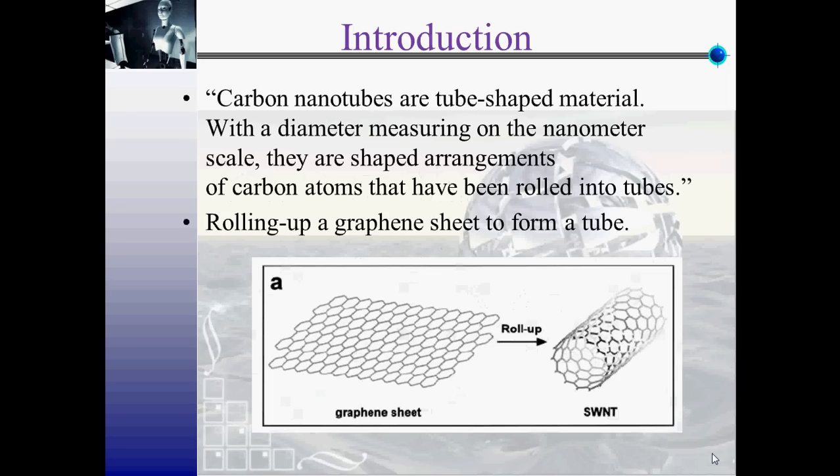They are shaped arrangements of carbon atoms that have been rolled into tubes. We can visualize a carbon nanotube as rolling up a graphene sheet to form a tube.